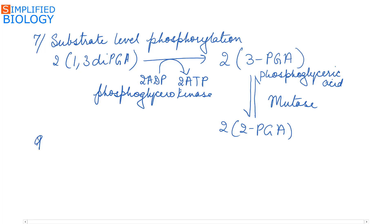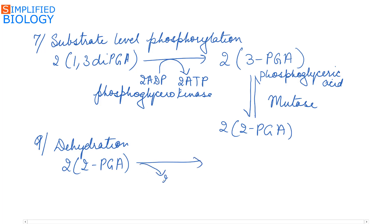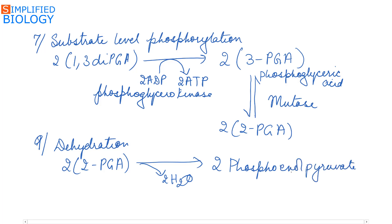The next step is dehydration. 2-phosphoglyceric acid loses water and changes into two molecules of phosphoenol pyruvate, abbreviated as PEP. The enzyme here is enolase — named from 'enol' in phosphoenol pyruvate.